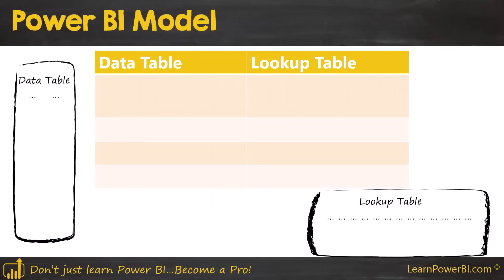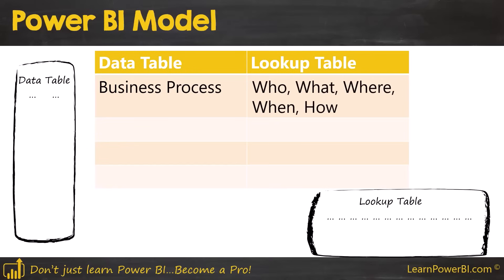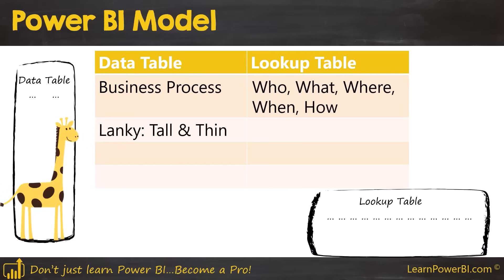Let's recap everything we have learned about data tables and lookup tables. Data tables typically represent a business process, whereas lookup tables represent the who, what, where, when, how. Data tables are lanky — think giraffes, tall and thin. They have lots and lots of rows and they tend to grow fast. Sales, you can have a million sales transactions every year, even every day, depending on the size of your business.